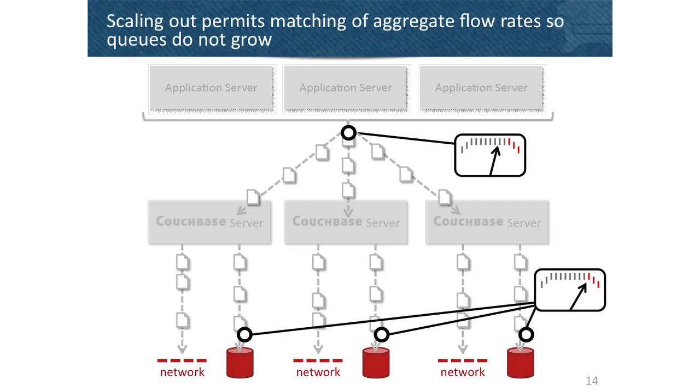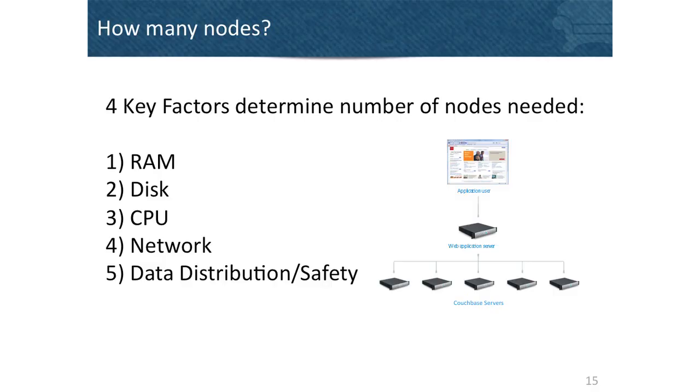Every one of these sizing factors scales out linearly with Couchbase Server. As you increase your write workload, that workload is shared amongst all nodes. By adding more nodes you get more disk throughput, more aggregate RAM, and more network throughput. There are basically five characteristics to take into account when deciding how many nodes you need, and any one of these could be the determining factor — the one that requires the highest node count wins. It's usually RAM.